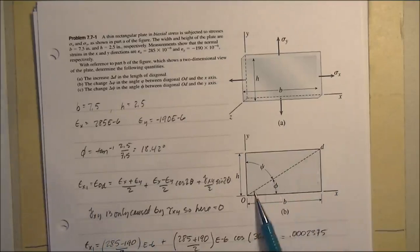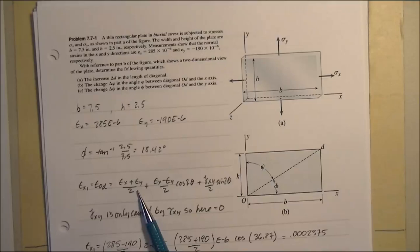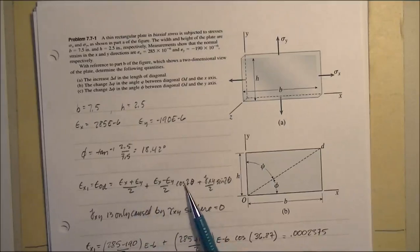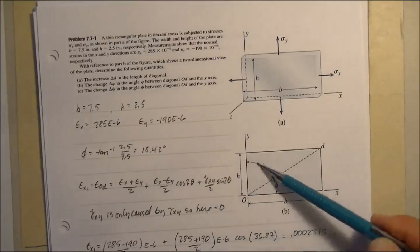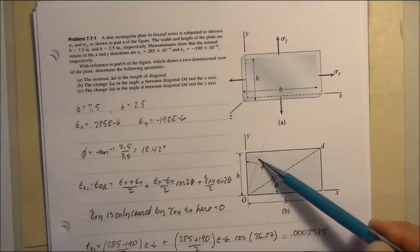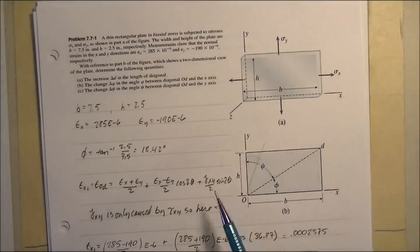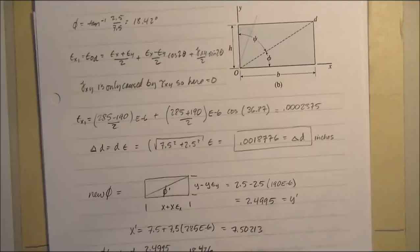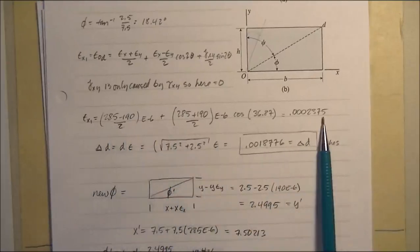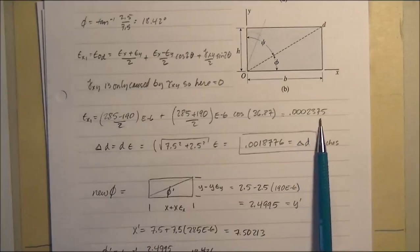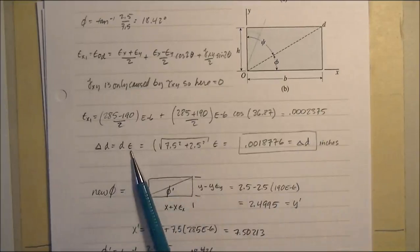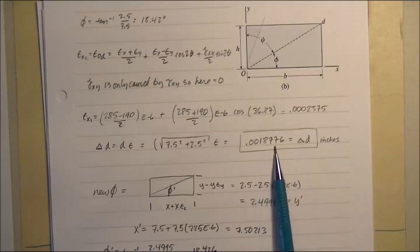First, let's compute the angle: 2.5 over 7.5 gives phi equal to 18.42 degrees. The strain along this diagonal axis is given by the strain transformation equation: epsilon x1 equals epsilon x plus epsilon y over 2, plus additional terms. Now, gamma xy — the shear strain on that face — can only be caused by shear stress tau, and there's no tau here, so that term goes to zero. With that simplification, the strain along the diagonal computes to 0.0002375.